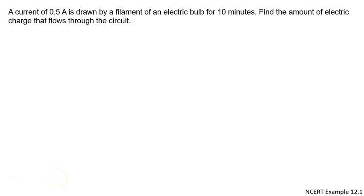A current of 0.5 ampere is drawn, I is given to us as 0.5 ampere or we can say 1 by 2 ampere, drawn by a filament of an electric bulb for 10 minutes. Time is given to us in 10 minutes.